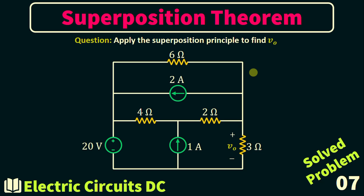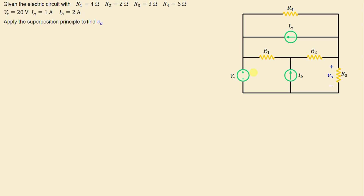Greetings, welcome to this new video about the superposition theorem — problem number seven. In this video I will demonstrate the application of the superposition method to solve a problem, guiding you through the step-by-step process. Let's consider a network consisting of four resistors labeled R1 through R4 as well as three independent sources. The question is to calculate the voltage Vo across resistor R3 by applying the superposition principle.